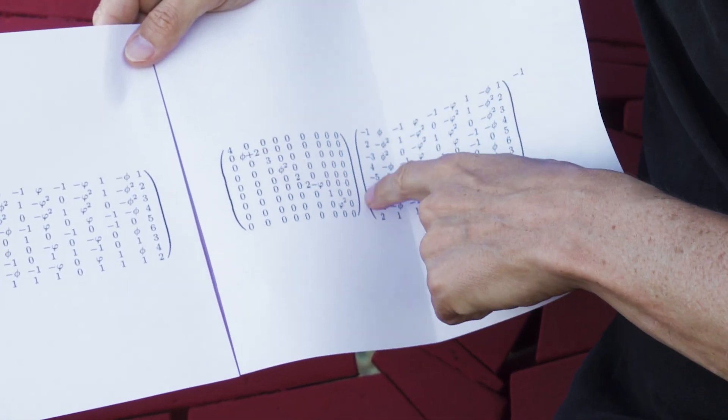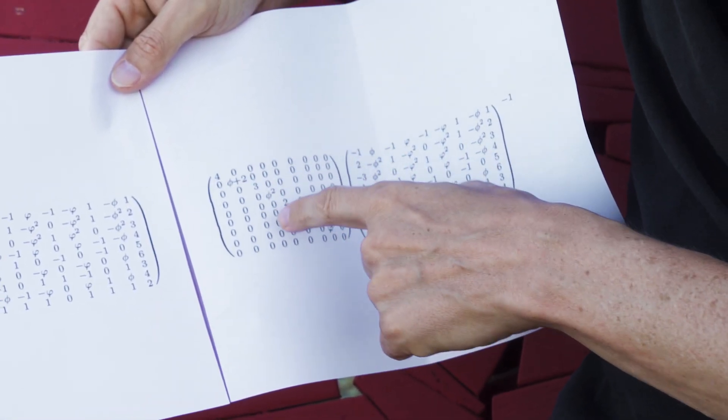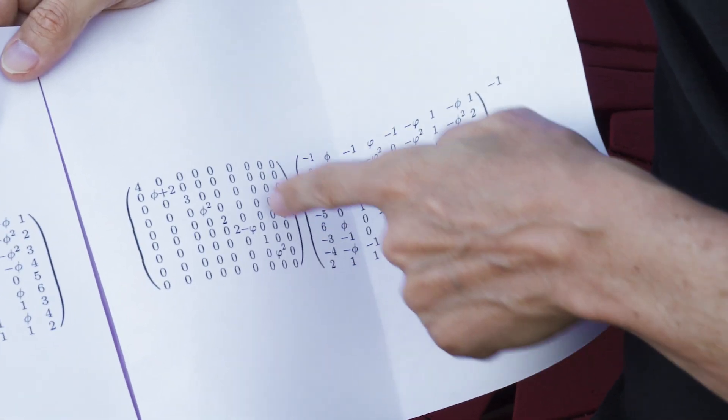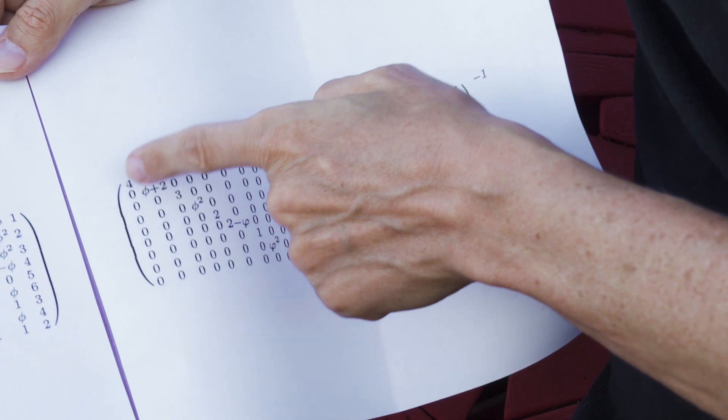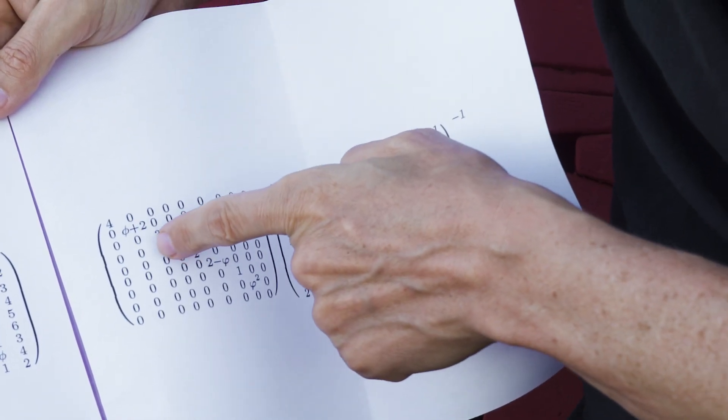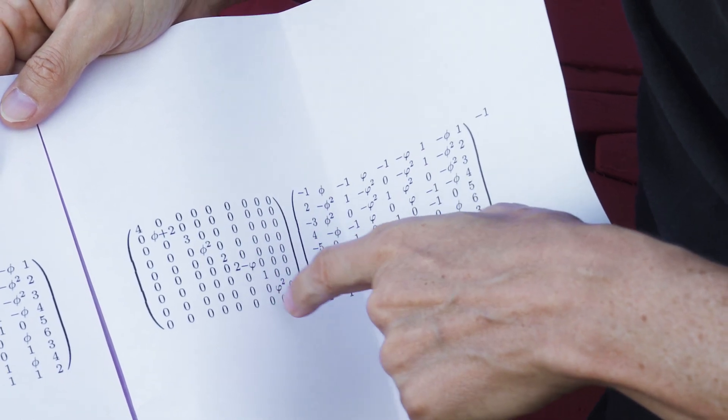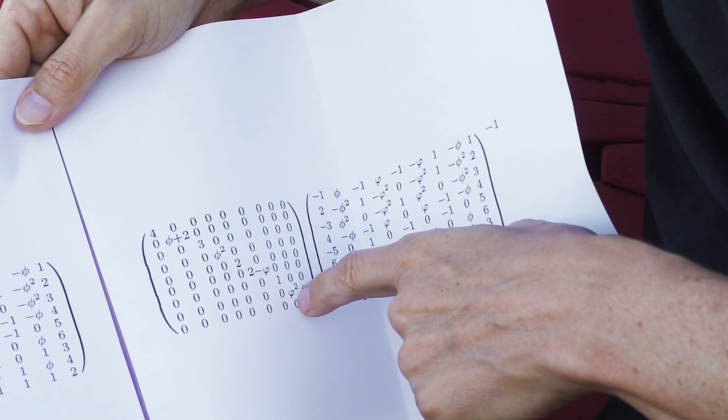And here we see that the diagonalization, so the diagonal matrix has only numbers on the diagonal and there phi, in fact 4, phi plus 2, 3, phi cube, 2, 2 minus 1 over phi, 1 and 1 over phi square.